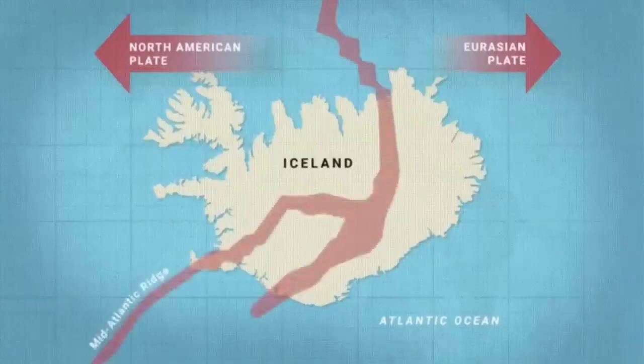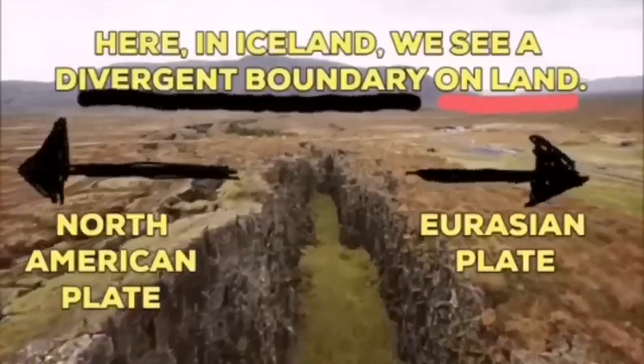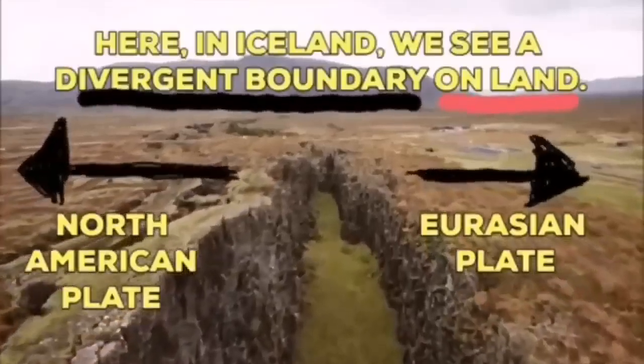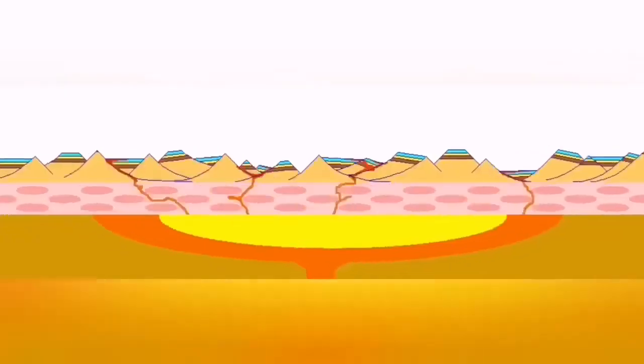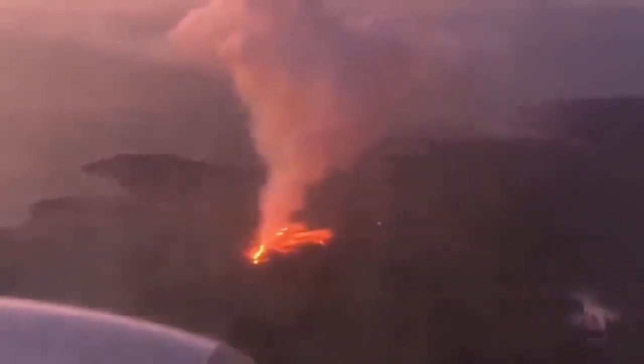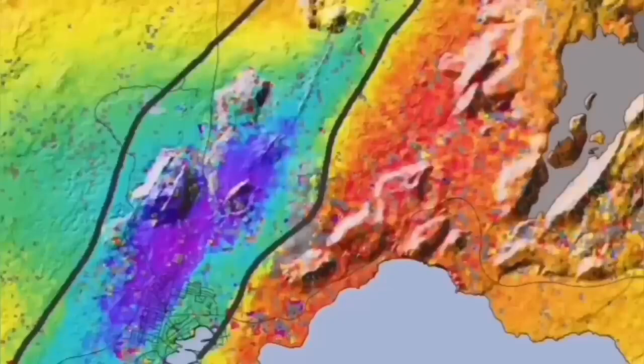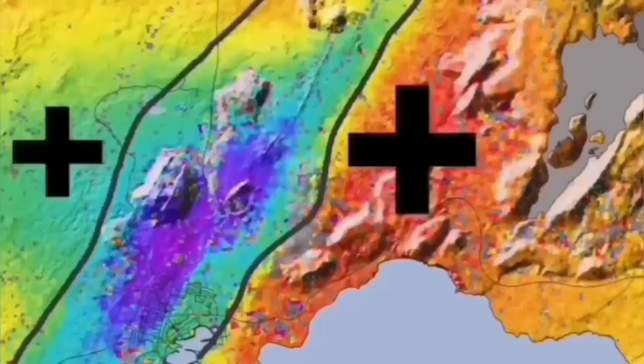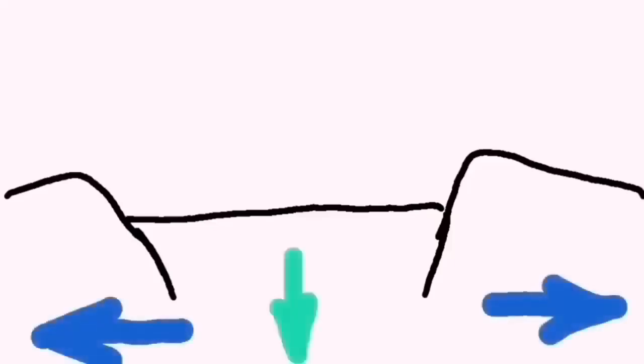Such a thing happens in Iceland on the land where we can see it. The Eurasian plate and North American plate, through this graben, this is the hollow that you see in the middle, are separating. Through them the magma forms and rises and creates lava eruption of the volcano.